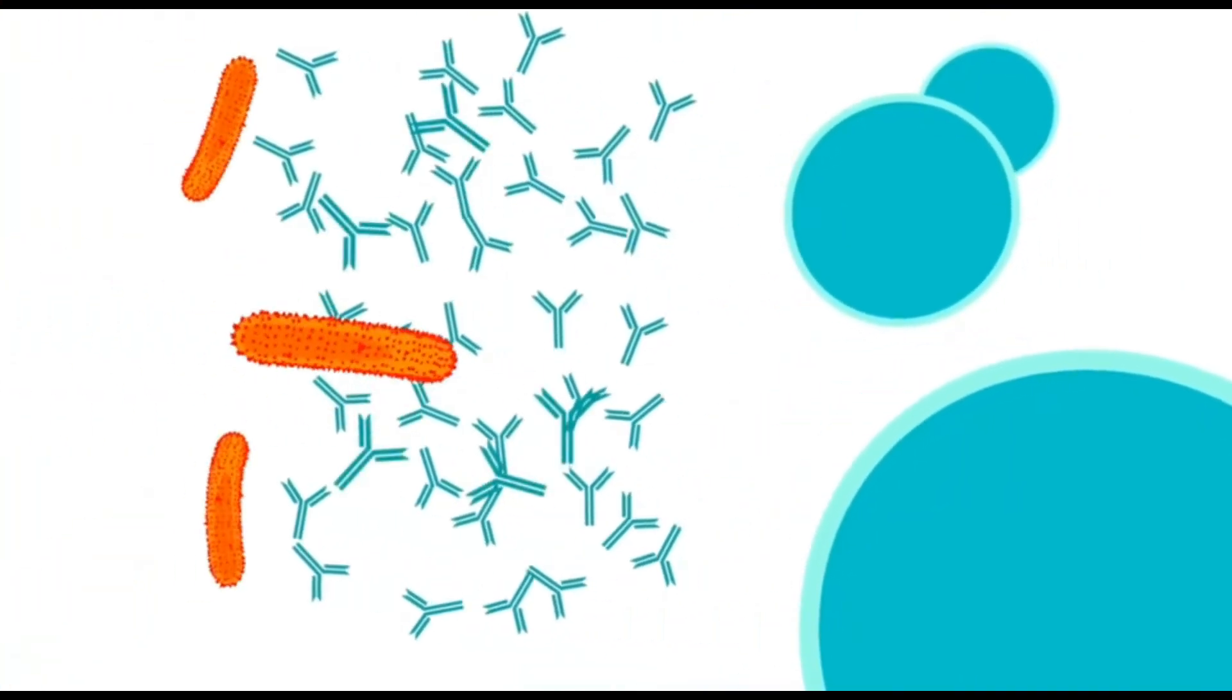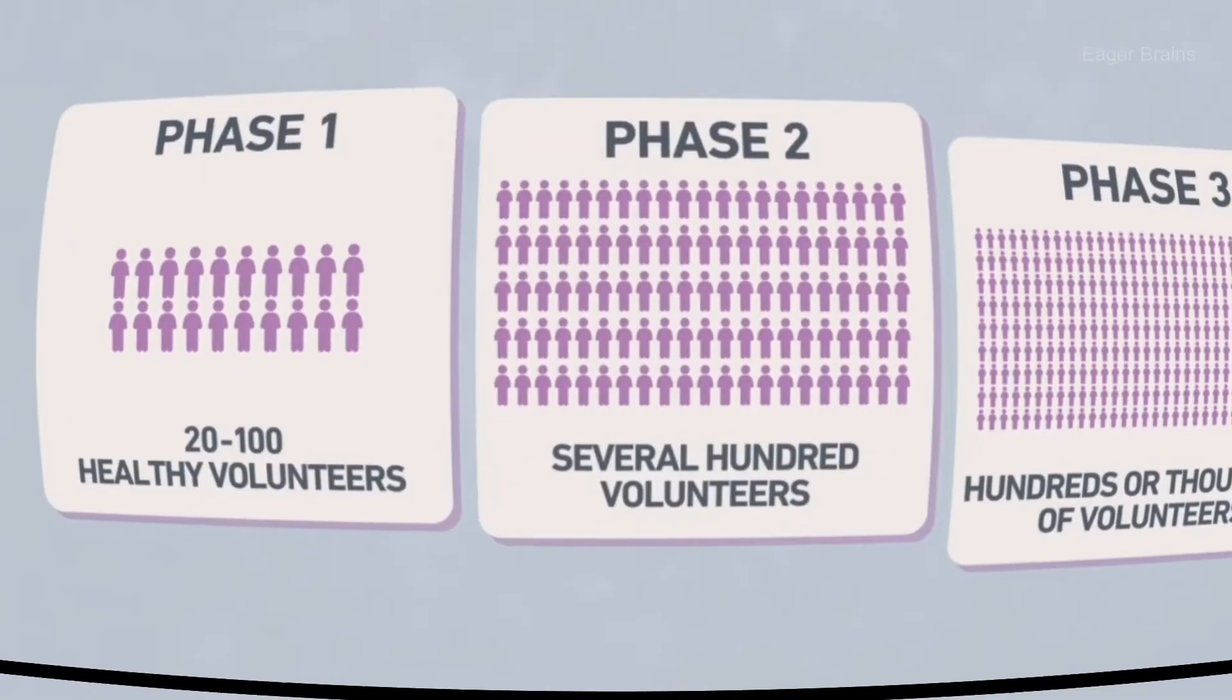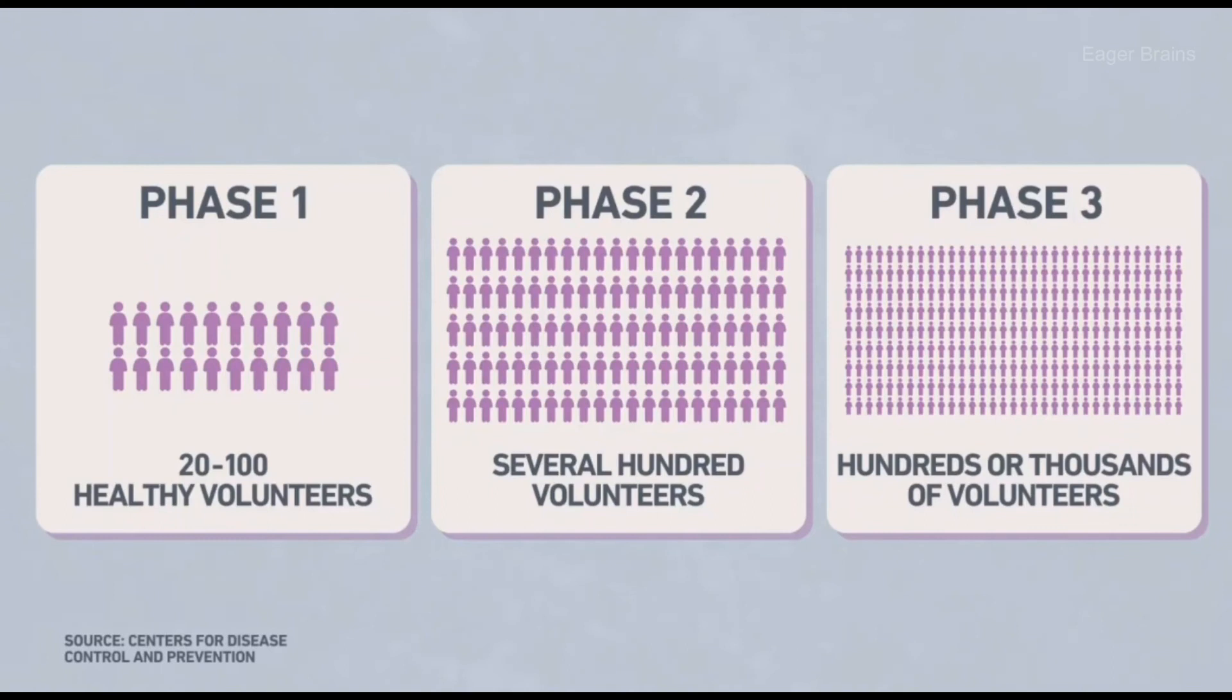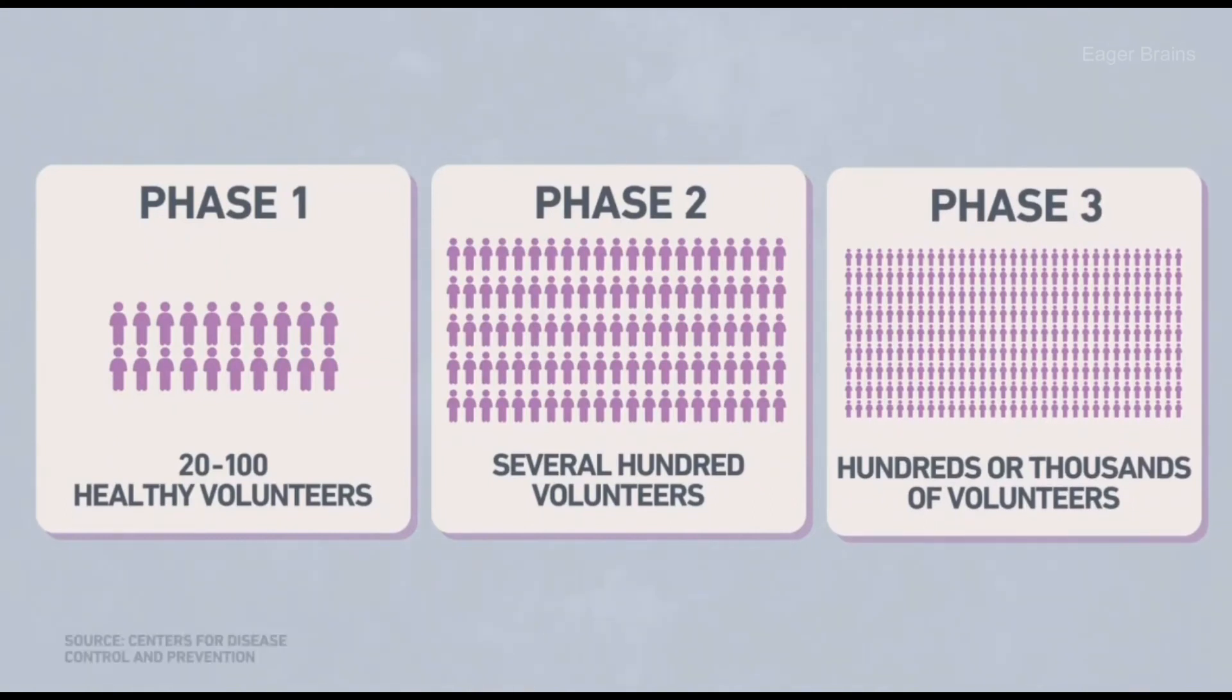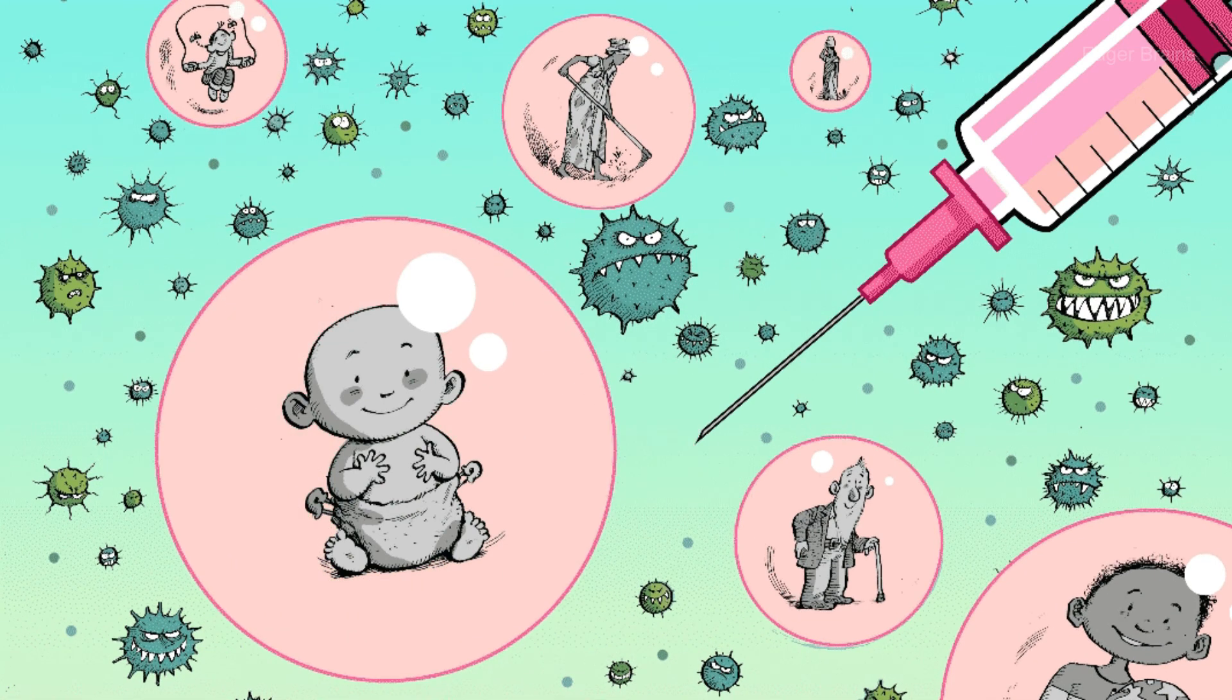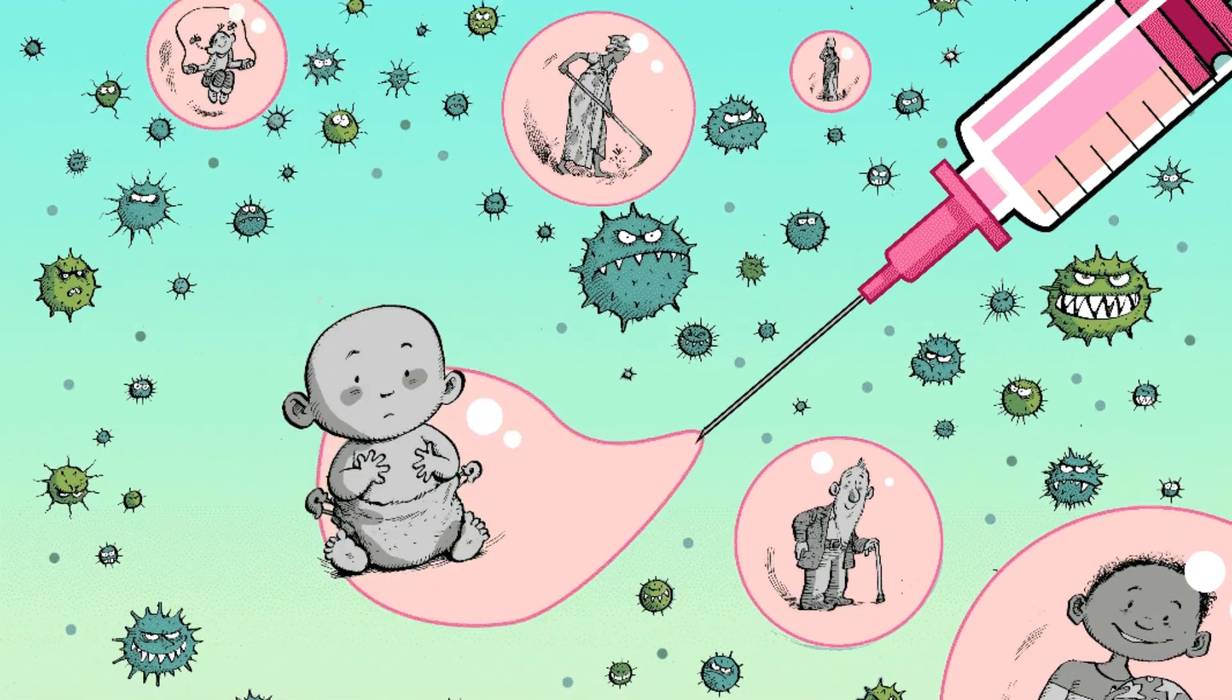People getting sick after vaccinations is very normal because the immune system is at work; this is called a side effect of vaccination. It is mostly safe to take a vaccine as it goes through several stages of testing: first with a few people, then a few hundred, then thousands. Our health system encourages people to get vaccinated when they are a child, and every child must get it to gain lifetime immunity.